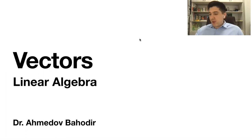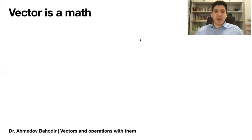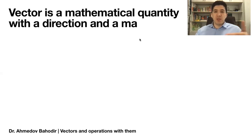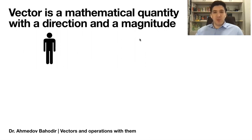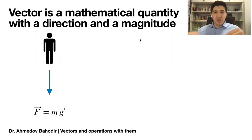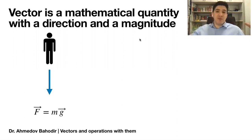First of all, let's define what vectors are. A vector is a mathematical quantity which comes with two attributes: direction and magnitude. This is especially useful in physics or chemistry where we need to define physical quantities which have two attributes. For example, the most popular example would be the force of gravity, which attracts all objects on Earth towards the Earth, and the force is proportional to the mass of the object.